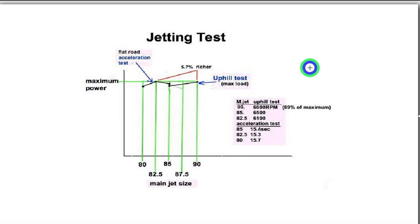So testing on the uphill, the number 85 main jet gave less speed at a certain marker along the uphill than the 90 did. And I didn't have any bigger jets to test, but this is sufficient to prove the point.